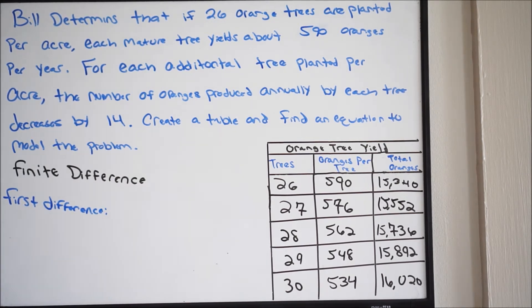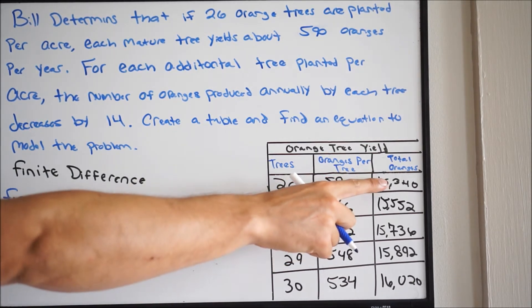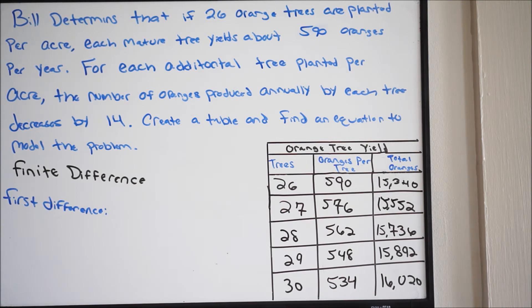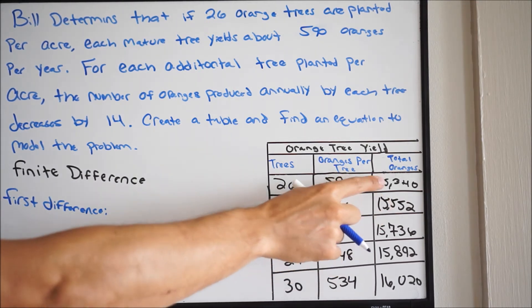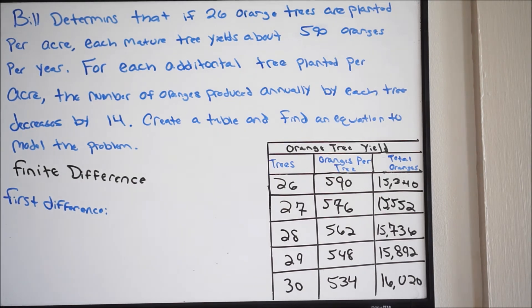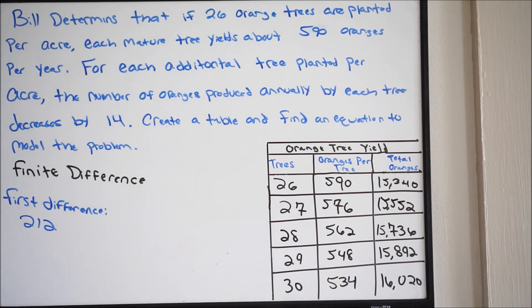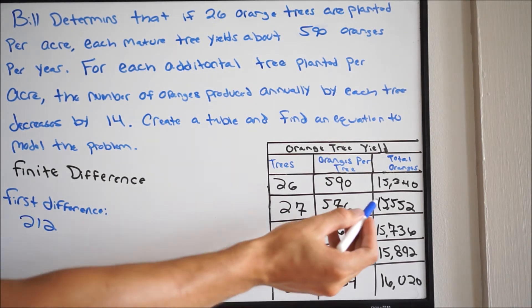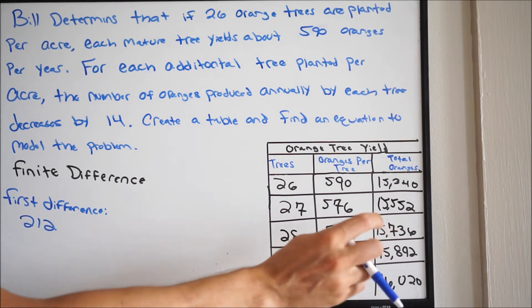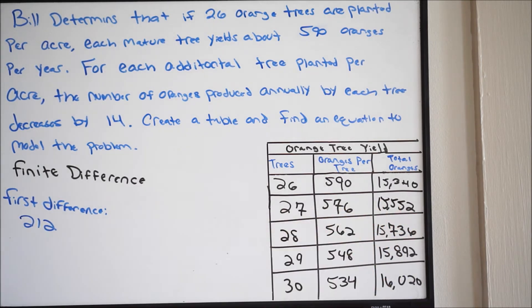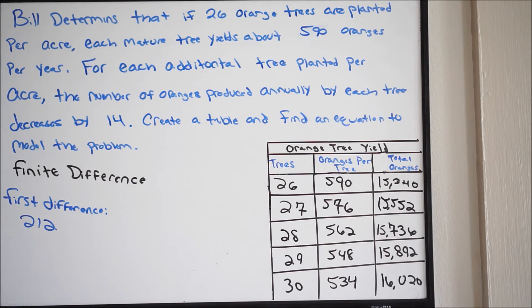Let me show you how we're going to set this up. Here's my first y value, here's my second — I'm going to subtract the two. So I'm going to do 15,552 minus 15,340 and I'm going to see the change in the two of them. So I get 212. Then going down, I'm going to see the change between these two values: 15,736 minus 15,552, and I'm going to get 184.